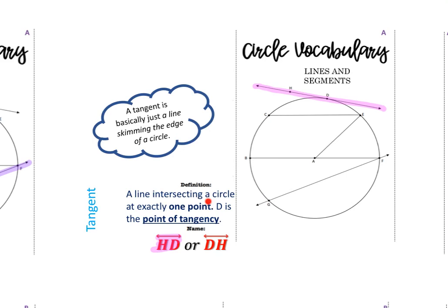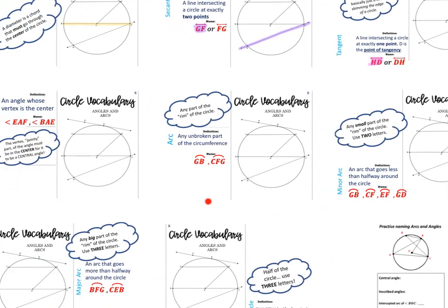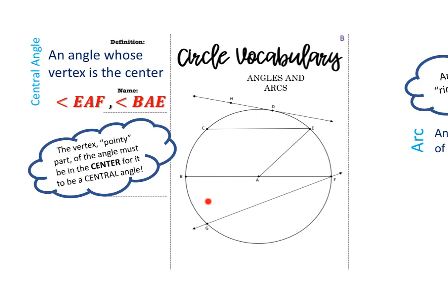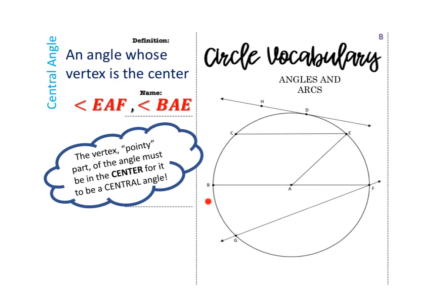Now you're going to switch to the other vocab sheet that has the vocabulary about angles and arcs — the one with central angle, inscribed angle, etc. The first one we're going to talk about is a central angle. A central angle is an angle whose vertex is the center. We use angle notation with three letters to name an angle, and the vertex must be on the center to be a central angle.